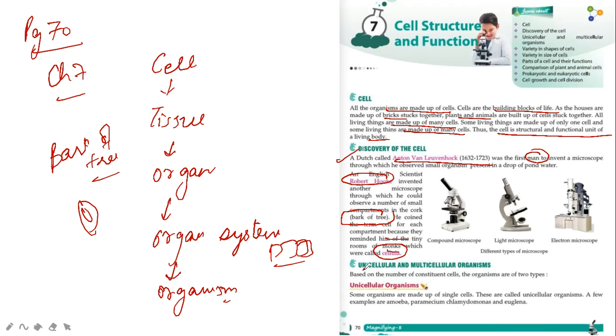We have two types of cells - unicellular and multicellular organisms. Organisms made from a single cell are called unicellular organisms, like amoeba, paramecium, chlamydomonas and euglena. These are unicellular organisms.